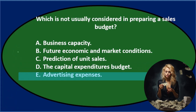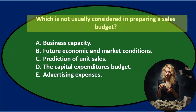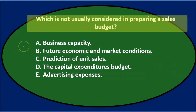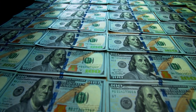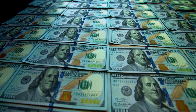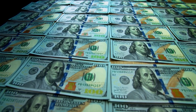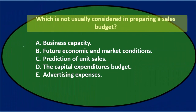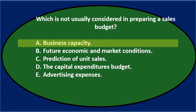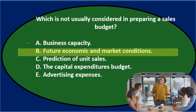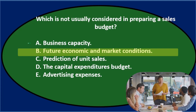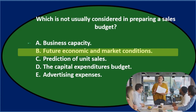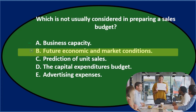Let's go through this again using the process of elimination. Which is NOT usually considered in preparing a sales budget? The sales budget is at the top of the budgeting process — one of the first things we start. A. Business Capacity — how much can we sell? That sounds reasonable, keep it. B. Future Economic and Market Conditions — we'll think of last year's numbers and consider future conditions to project future sales. C. Prediction of Unit Sales — that's exactly what we're doing, predicting units to be sold as part of our sales production.